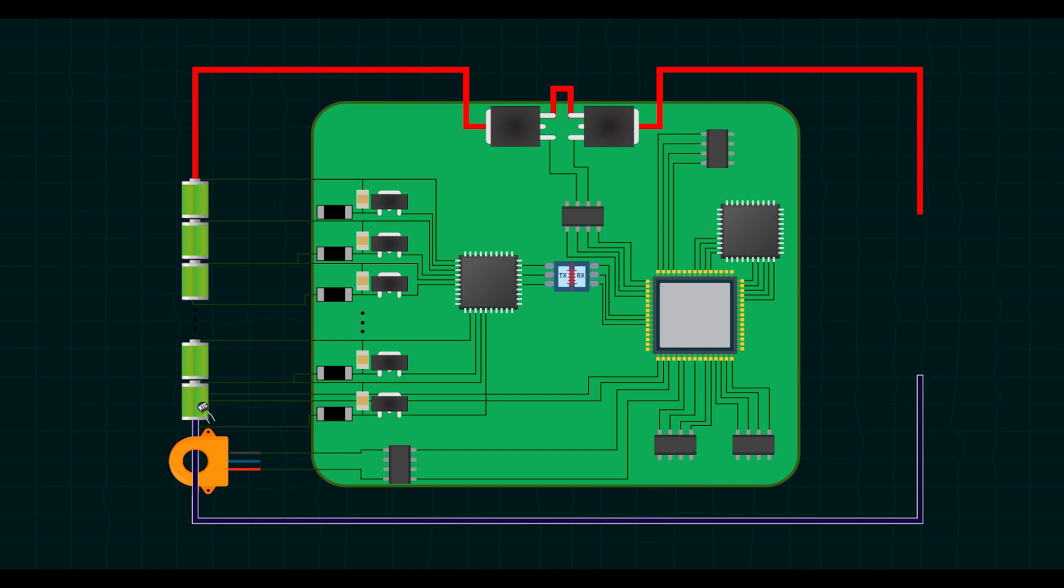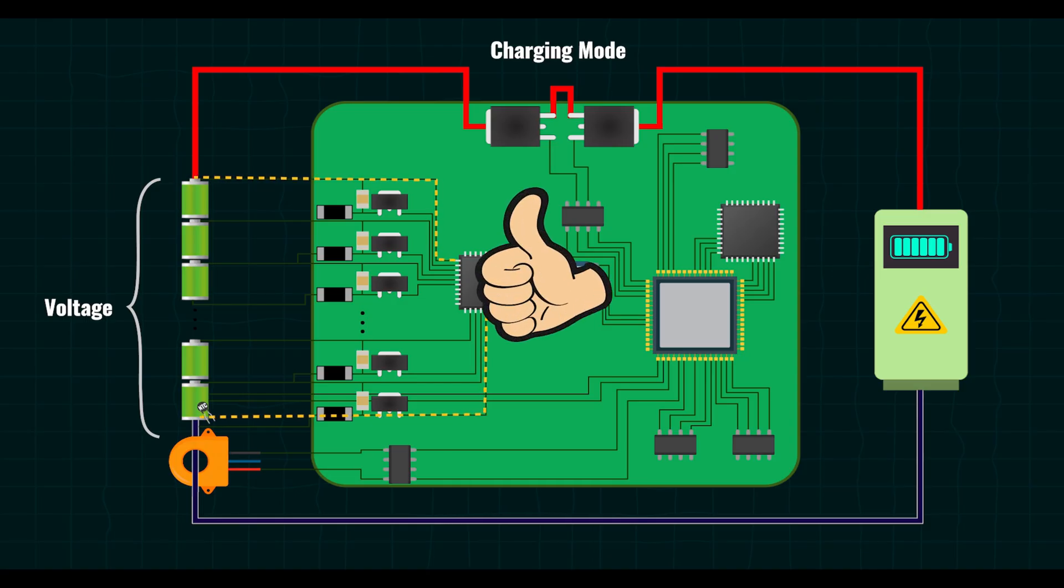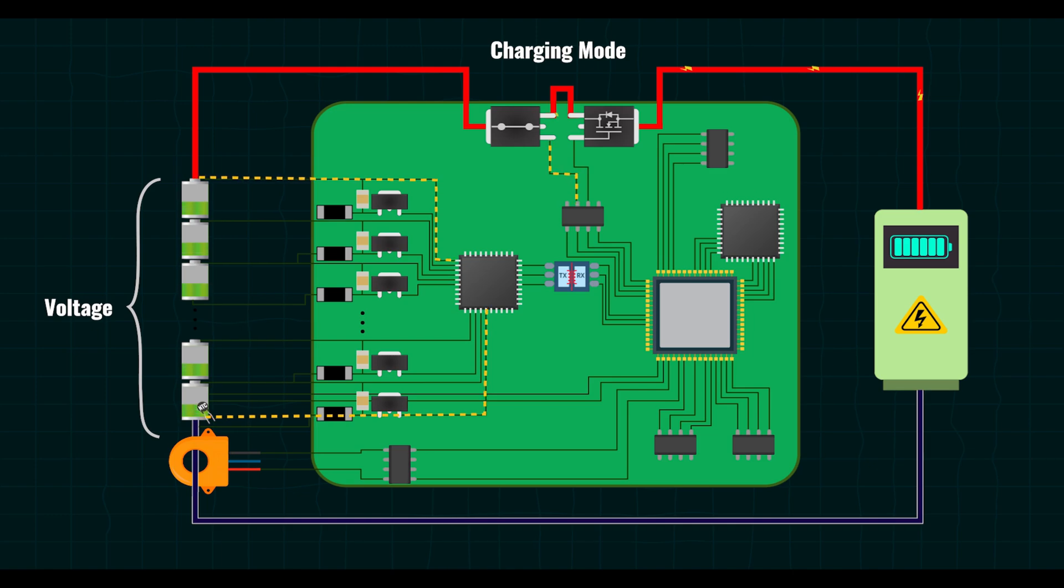Controlling when and how the battery charges or discharges is very important to keep the battery safe and long lasting. Let's break down how this works in simple terms. First is charging mode, how the battery gets power. When we charge a battery, we are filling it with energy from an outside charger. What happens logically here? The charger is connected to the battery. The BMS checks the battery's voltage, temperature and current to make sure everything is okay. If it's safe, the charging MOSFET is turned on by applying a small control voltage to its gate. This lets current flow from the charger into the battery. The BMS keeps watch on everything. If the voltage goes too high or the battery gets too hot, it turns off the MOSFET to stop charging.